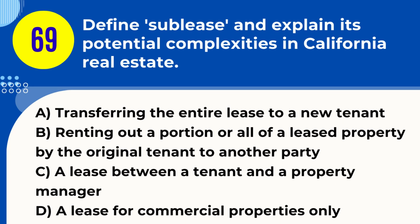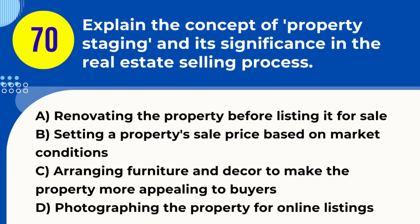Question 69. Define sublease and explain its potential complexities in California real estate. A. Transferring the entire lease to a new tenant. B. Renting out a portion or all of a leased property by the original tenant to another party. C. A lease between a property manager. D. A lease for commercial properties only. Answer: B. Explanation. A sublease in California real estate occurs when the original tenant rents out a portion or the entirety of their leased property to another party. This arrangement can be complex as it typically requires the landlord's approval, and the original tenant remains responsible for the lease obligations, including rent and property care.